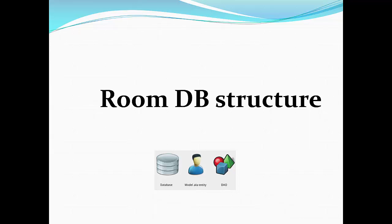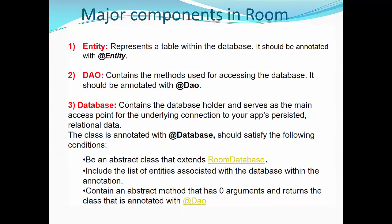Let's talk about Room database structure. There are three main components in Room: entity, DAO, and database. Entity represents a table within the database and should be annotated with @Entity. DAO is data access object. It contains the methods used for accessing the database and should be annotated with @Dao.